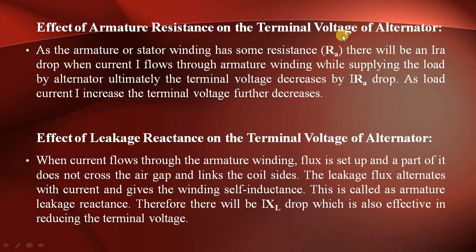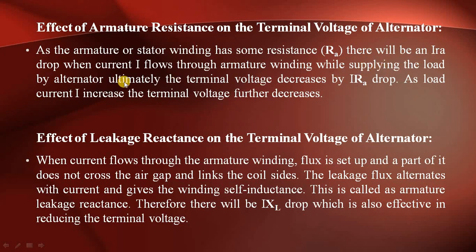Now we will see the effect of armature resistance on the terminal voltage of the alternator. The armature or stator winding has some resistance. After supplying load, the terminal voltage is reduced. When load current flows through the armature winding resistance, there is an IRA drop, and the terminal voltage decreases. If load current increases, the terminal voltage will decrease further.